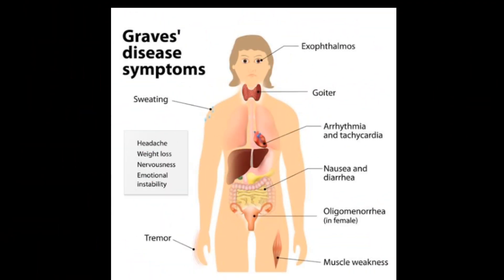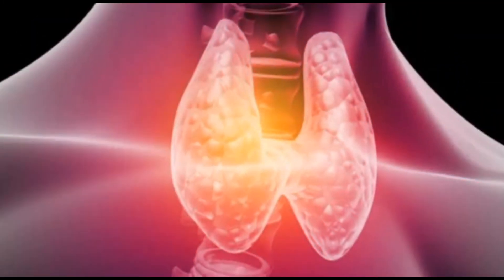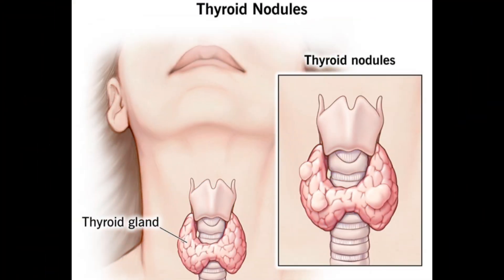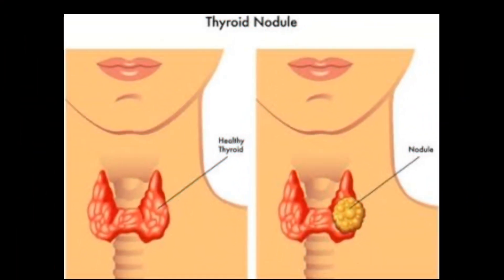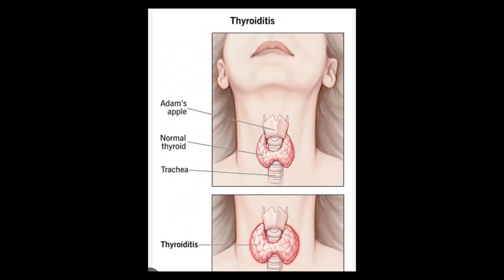Conditions that cause hyperthyroidism include Graves' disease, where the entire thyroid gland becomes overactive and produces too much hormone — also called diffuse toxic goiter or enlarged thyroid gland. Hyperthyroidism can also be caused by overactive nodules: a single nodule is called a toxic autonomously functioning thyroid nodule, while a gland with several nodules is called a toxic multinodular goiter.